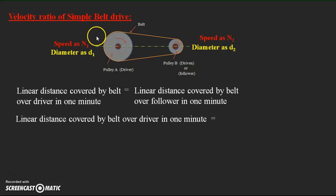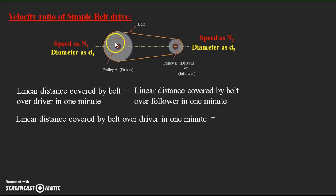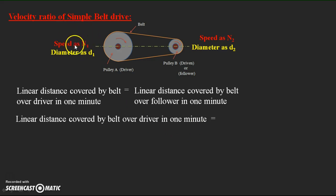For a number of rotations, the distance covered equals the circumference multiplied by the number of rotations. The number of rotations per minute multiplied by the circumference gives the distance covered by the belt over the driver per minute. Distance per unit time with the number of rotations per time becomes the speed of the pulley.